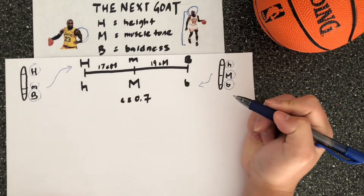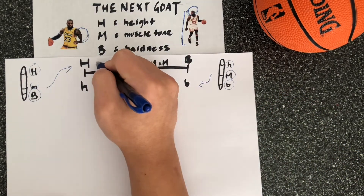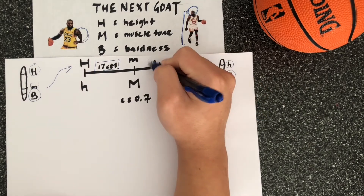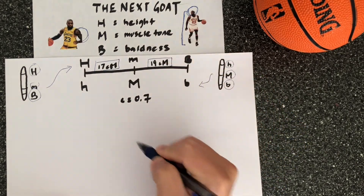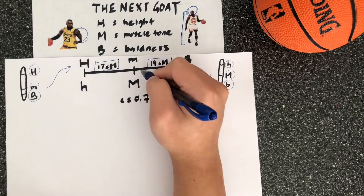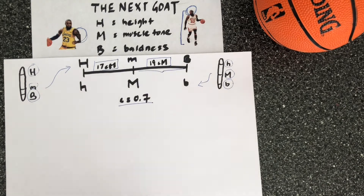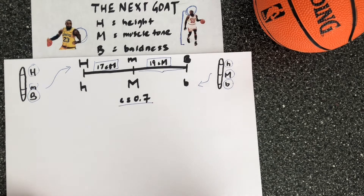You can see that the distance between the first and second loci is 17 centimorgans, and the distance between the second and third is 19 centimorgans. So we can expect to have more crossovers between the muscle tone and baldness loci. The determined coefficient of coincidence is 0.7.